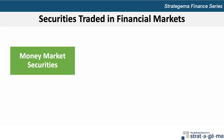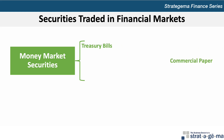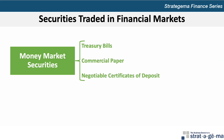Money markets facilitate the sale of short-term debt securities by deficit units to surplus units. The securities traded in this market are referred to as money market securities. Common types of money market securities include treasury bills, commercial paper, and negotiable certificates of deposit.